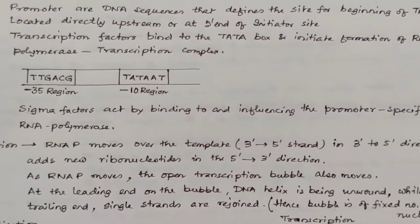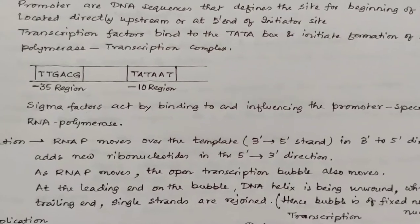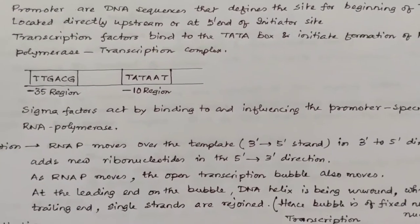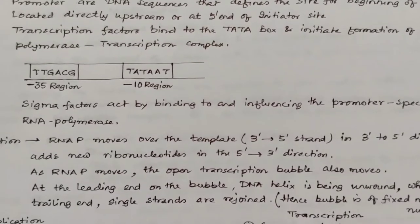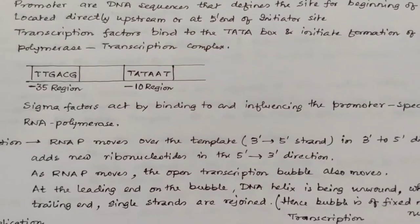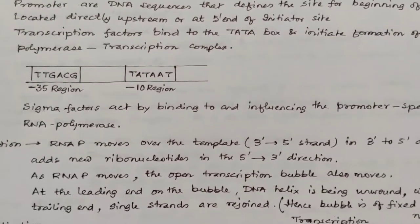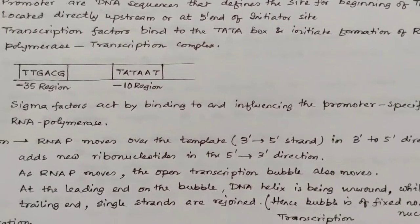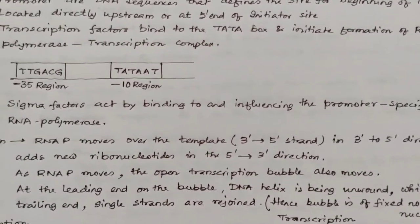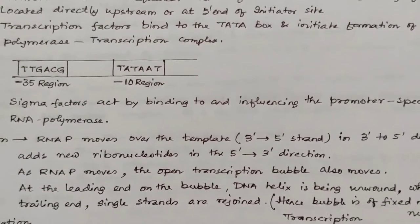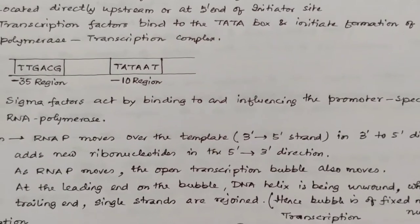Now the third and last part of transcription is termination. Termination in prokaryotes may be of two types. One of them is rho-independent termination, which is found on the DNA template strand. In the DNA template strand, we find a string of adenines in the DNA sequence that are transcribed into uracils in the RNA sequence.